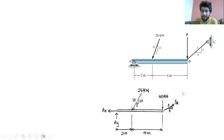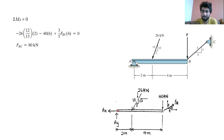Let's draw the free body diagram. First, we have to find the force that is acting on the cord BC. For this, we can apply moment at point A. When we apply moment at point A, we get this 26 kN force and we use its vertical force. For the vertical force, we have the sine component, which is perpendicular over hypotenuse, so we have 12 over 20. And we have a perpendicular distance of 2 meters.